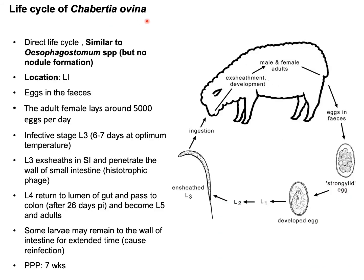The life cycle of Chabertia ovina is a direct life cycle, as there is no involvement of an intermediate host. This life cycle is also similar to that of Oesophagostomum species, with one exception: in Oesophagostomum species, there is nodule formation in the large and small intestine, but for Chabertia ovina there is no nodule formation.